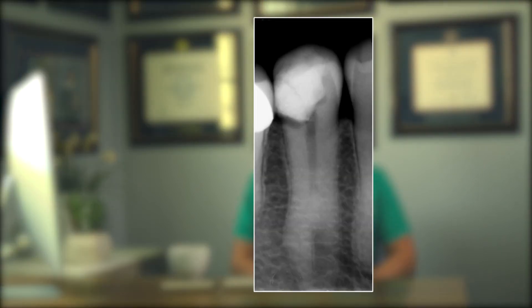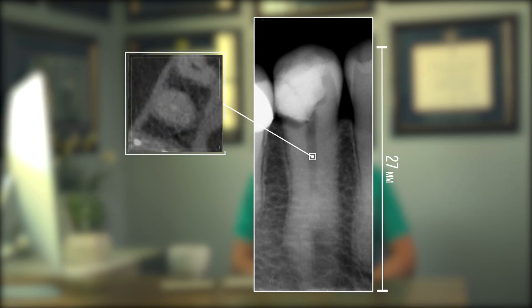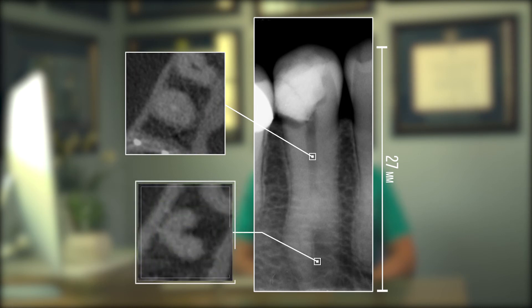This one canal changing to a C-shaped canal really adds an additional level of difficulty to this case. Now you can see how complicated the situation is: I have a premolar that is 27 millimeters long. The first 15 millimeters is a single canal, and then it becomes a C-shaped canal. The trick is how to shape a C-shaped canal beyond a small canal, and how to plan to clean it.